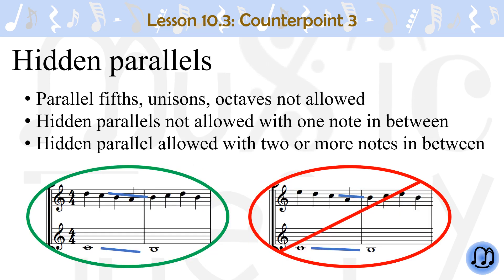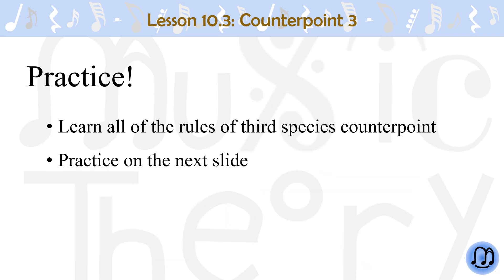Parallel fifths, unisons, and octaves are not allowed. Hidden parallel perfect consonances are not allowed with one note in between, but they are allowed with two or more notes in between. In the examples shown, the left side is acceptable because the parallel octaves, labeled with the lines, have two notes between them. The right side is not allowed because there is only one note between the parallel octaves. You need to learn and memorize all of the rules of writing third species counterpoint, and the best way is by practicing. Let's try it on the next slide.